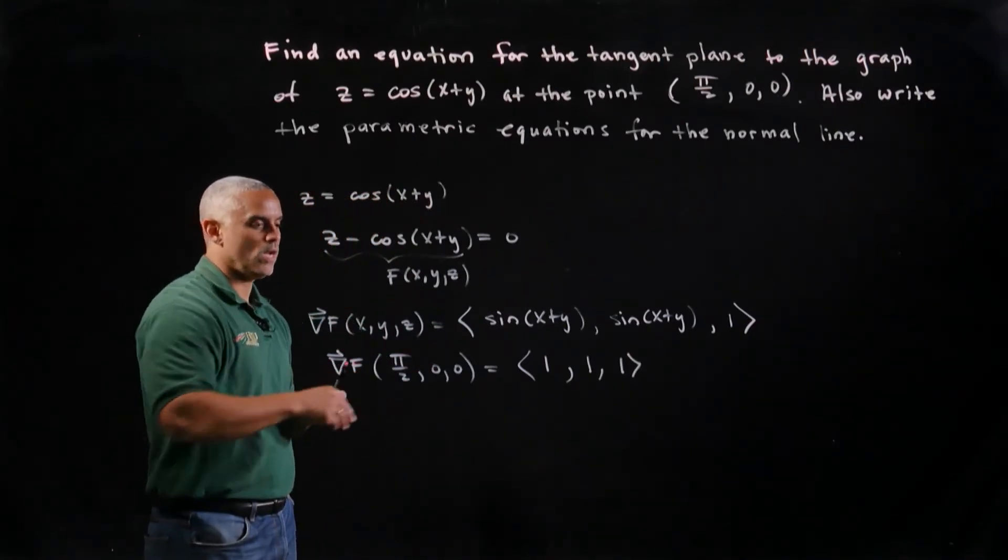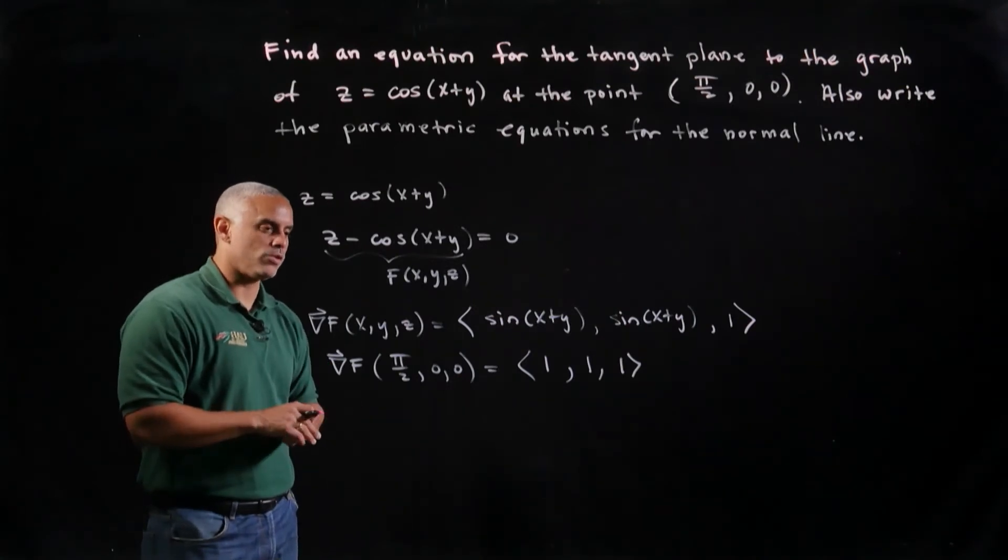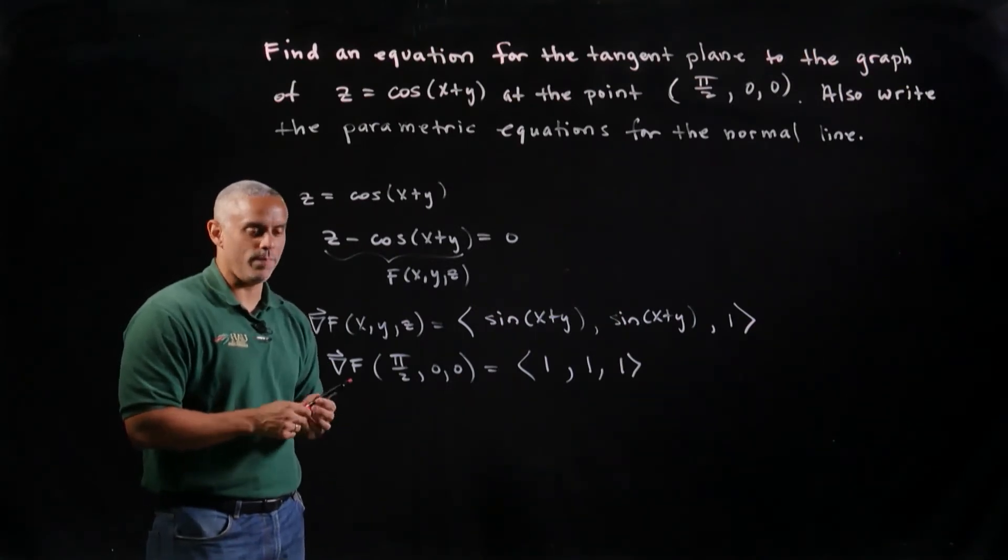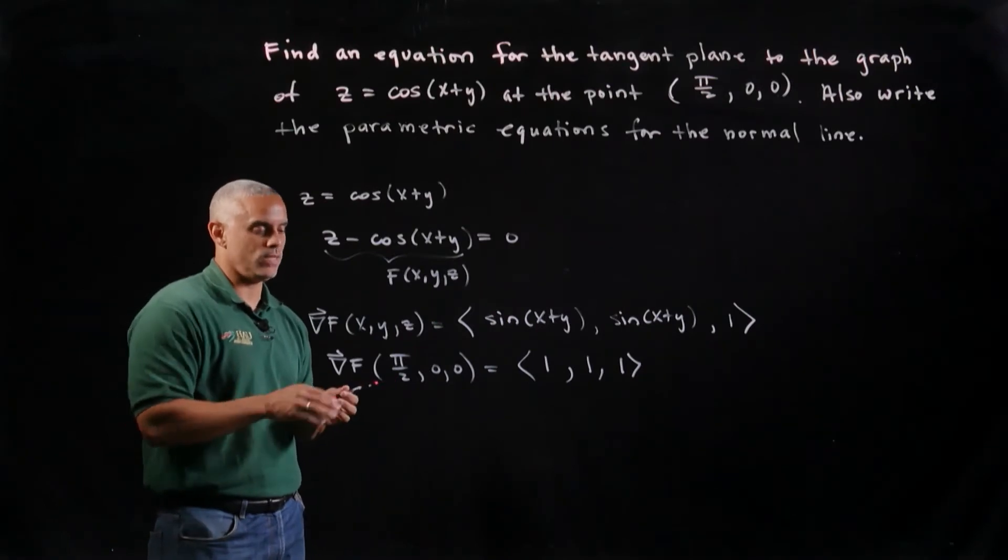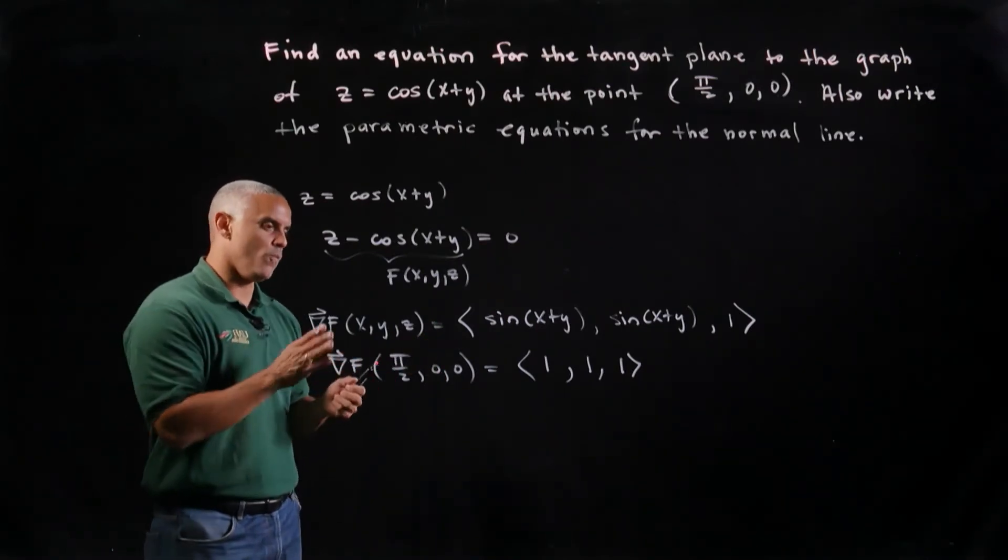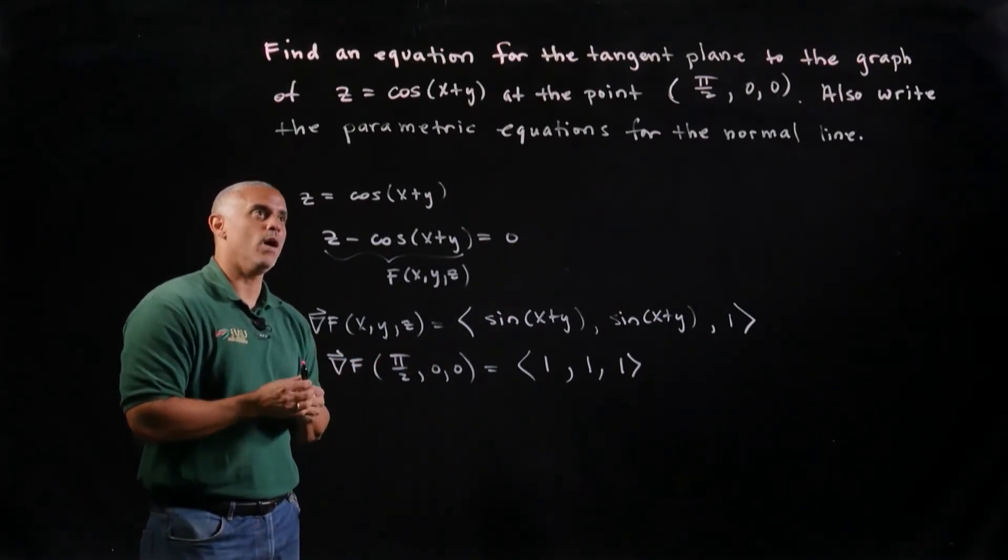So now my gradient tells me to travel in direction 1, 1, 1 for max change. And it's not a unit vector, but it still points in the direction of max change.